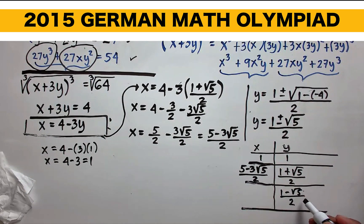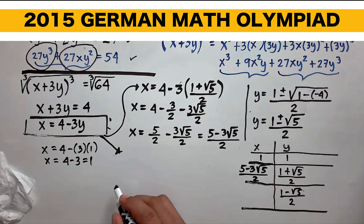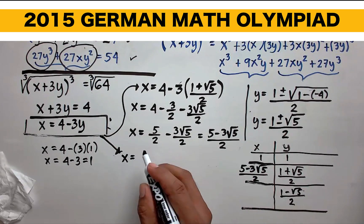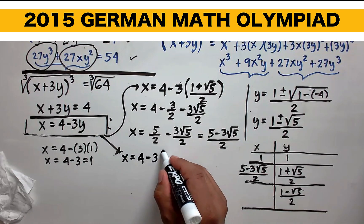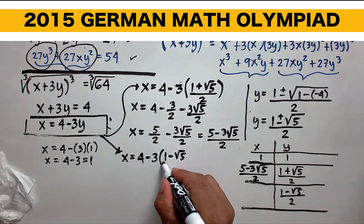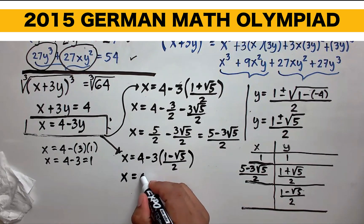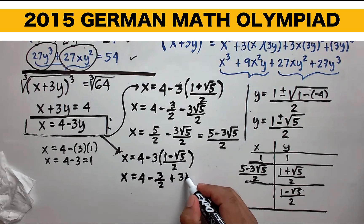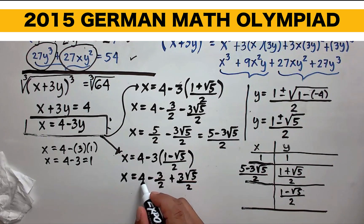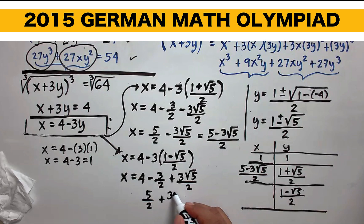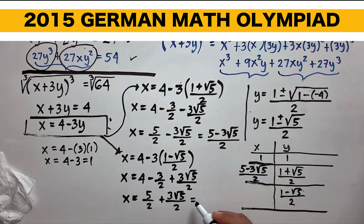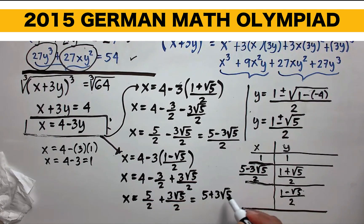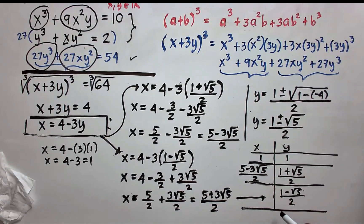When y is (1 minus the square root of 5) over 2, x equals 4 minus 3 times (1 minus the square root of 5) over 2. This equals 4 minus 3 halves plus 3 square root of 5 over 2. Since 2 times 4 is 8, minus 3 is 5, we get 5 over 2 plus 3 square root of 5 over 2, which can be written as one fraction: (5 plus 3 square root of 5) over 2.